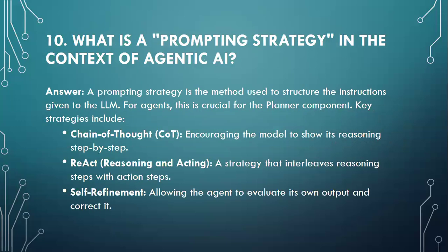Moving to question number ten: What is the prompt strategy in the context of agentic AI? A prompt strategy is the method used to structure the instructions given to the LLM for agents — this is crucial for the planner component. Key strategies include: Chain of Thought (CoT) — encouraging the model to show its reasoning step-by-step; ReAct (Reasoning and Acting) — a strategy that interleaves reasoning steps with action steps; and Self-refinement — allowing the agent to evaluate its own output and correct it.